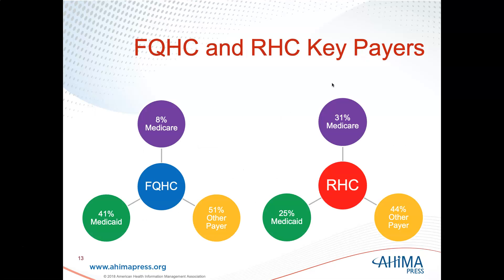Looking at key payers: for FQHCs, 41% is Medicaid, 8% is Medicare, and 51% is other payers. For RHCs, 25% is Medicaid, 31% is Medicare, and 44% is other payers. So there is a notable difference in their payer mix.